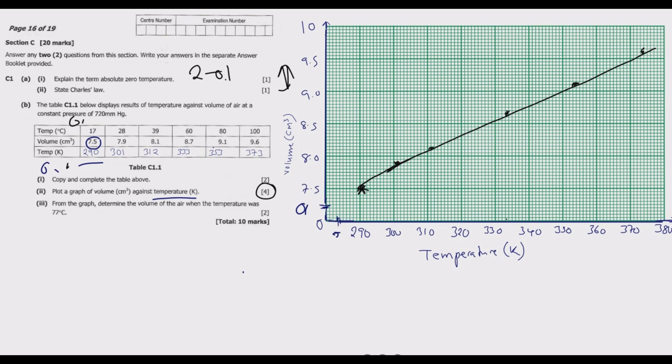You go to number 3. From the graph, determine the volume of the air when the temperature was 77 degrees Celsius. We need to use that formula again, because what we're given now is in degrees. We need to find the volume, these are in Kelvins. So we need to find the temperature in Kelvins. Temperature in Kelvins equals temperature in degrees plus 273.